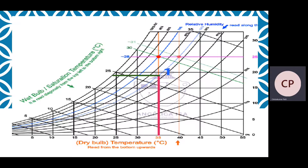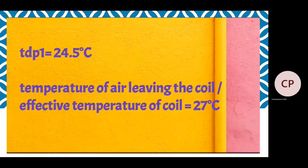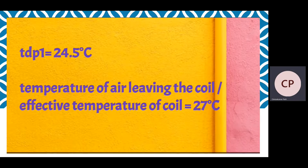We note down the dew point temperature at point 1. With the help of the green line extended, the temperature is below 25 degree Celsius. So the dew point temperature at point 1 is equal to 24.5 degree Celsius. Therefore, Tdp1 is equal to 24.5 degree Celsius.